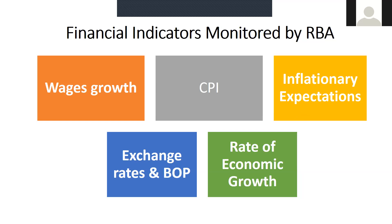So if these inflationary expectations are high, the Reserve Bank would want to ensure that it implements monetary policy action at the earliest. Likewise, the exchange rate is monitored — is the dollar value going up or going down? Based on that, it would take policy measures. Alongside this, the rate of economic growth is monitored. If the economy is going well, in that optimistic scenario, the Reserve Bank would anticipate that price levels are also likely to go up, because as GDP goes up, the price level goes up, and income, output, and employment all increase during times of boom.